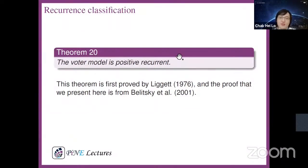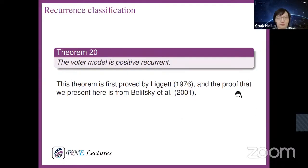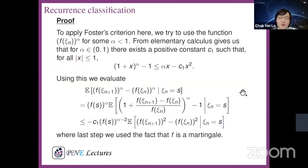Theorem 20: the voter model is positive recurrent. This means no matter which configuration we start with, we always end up at the heavyside configuration. This theorem was first proved by Liggett in 1976, and the proof presented here is from Liske et al., 2001. We want to apply the Foster criterion. The function we use is F(s)^alpha for some alpha < 1, to be determined.